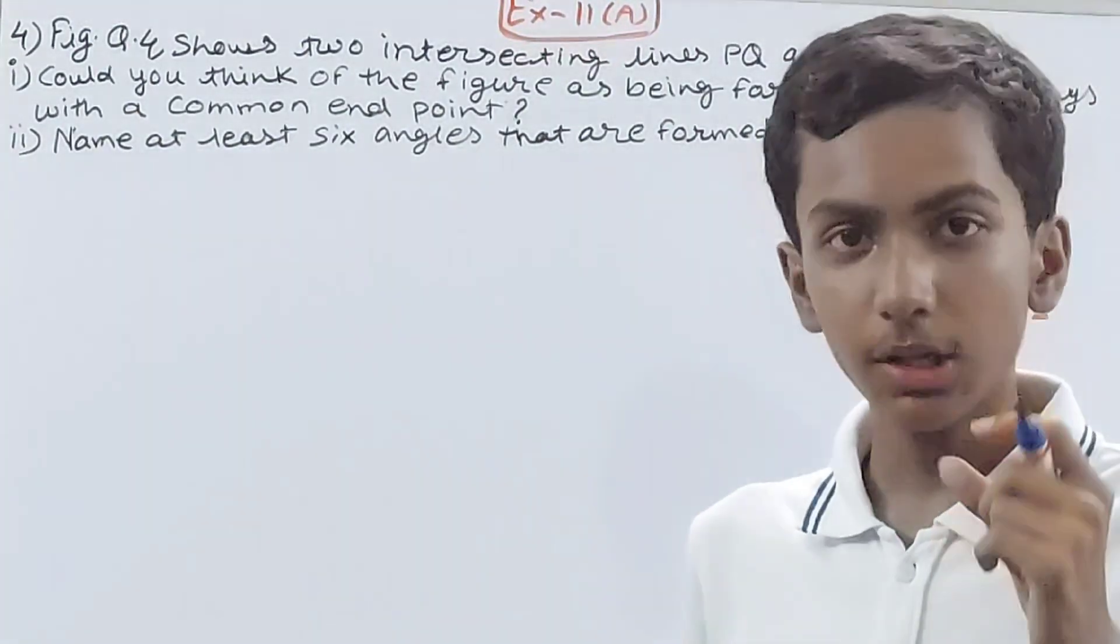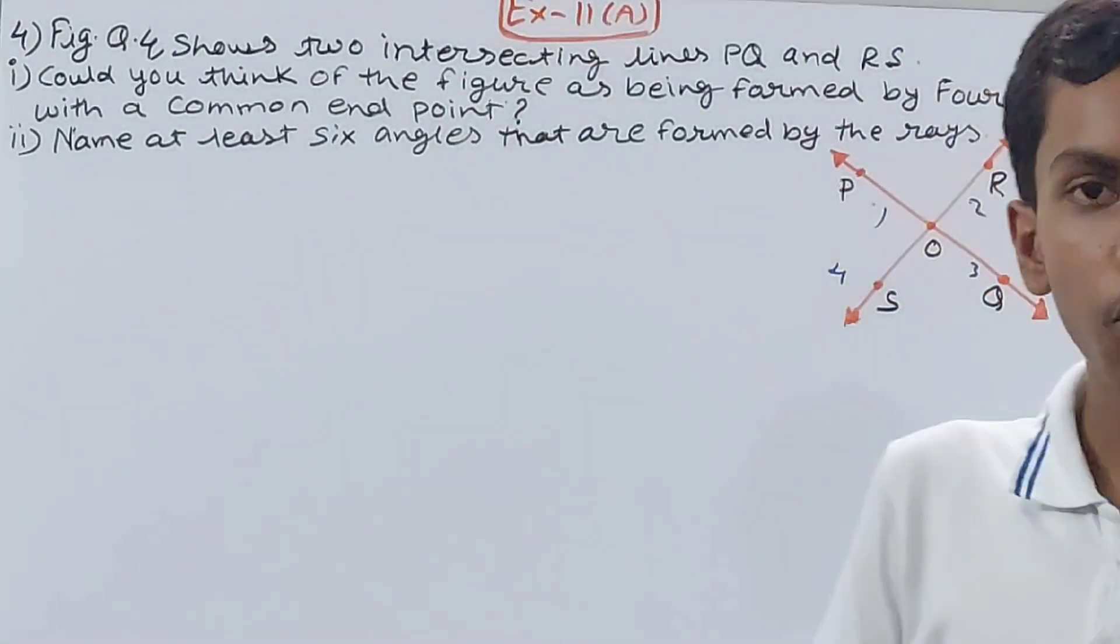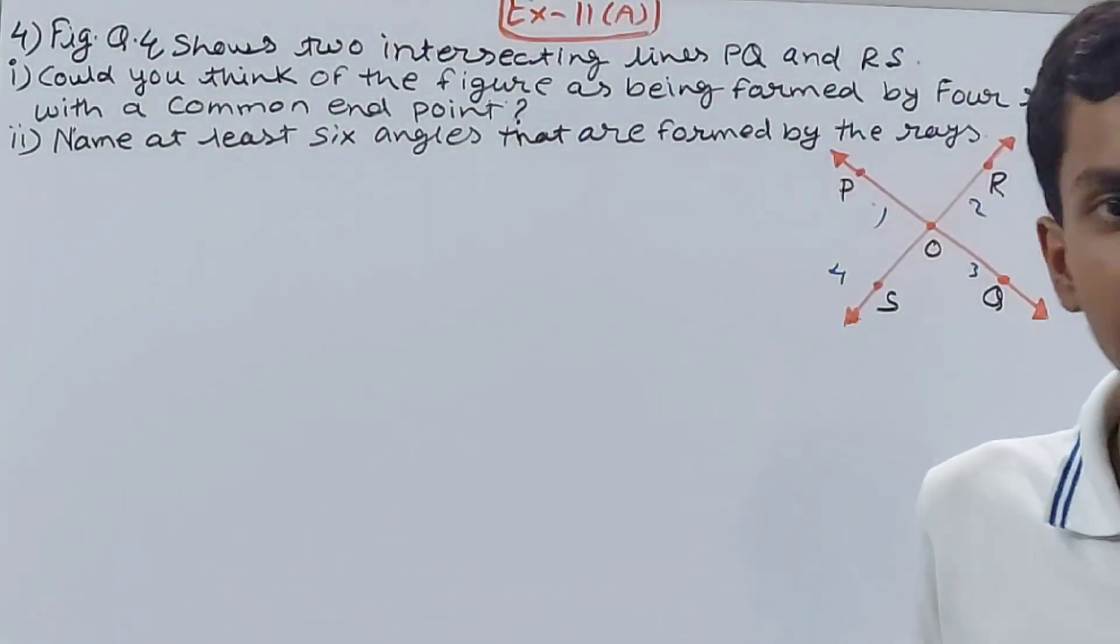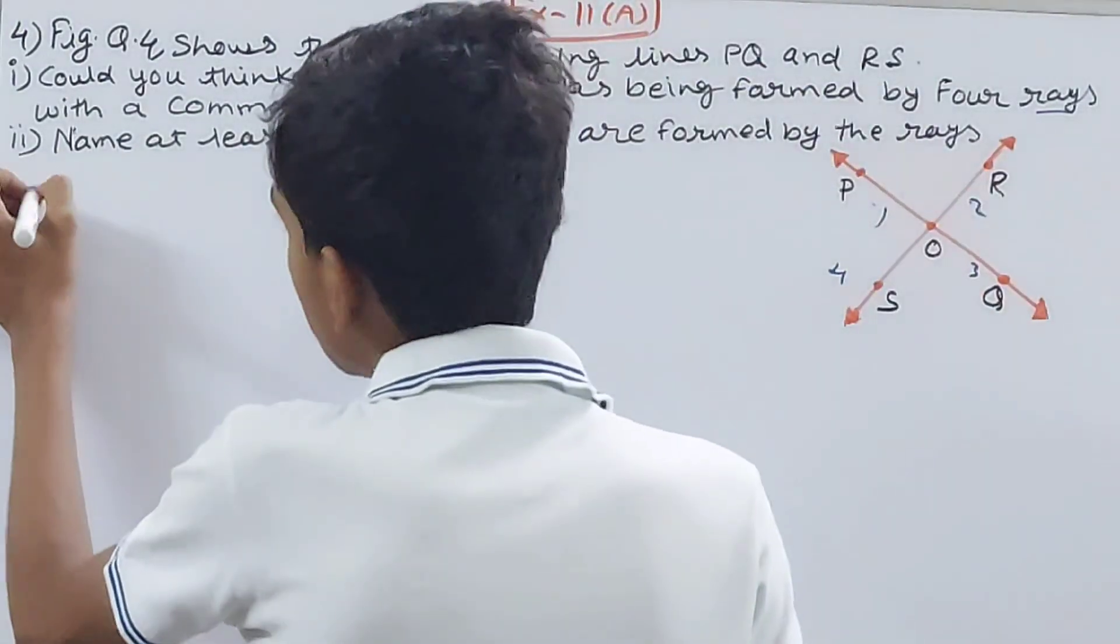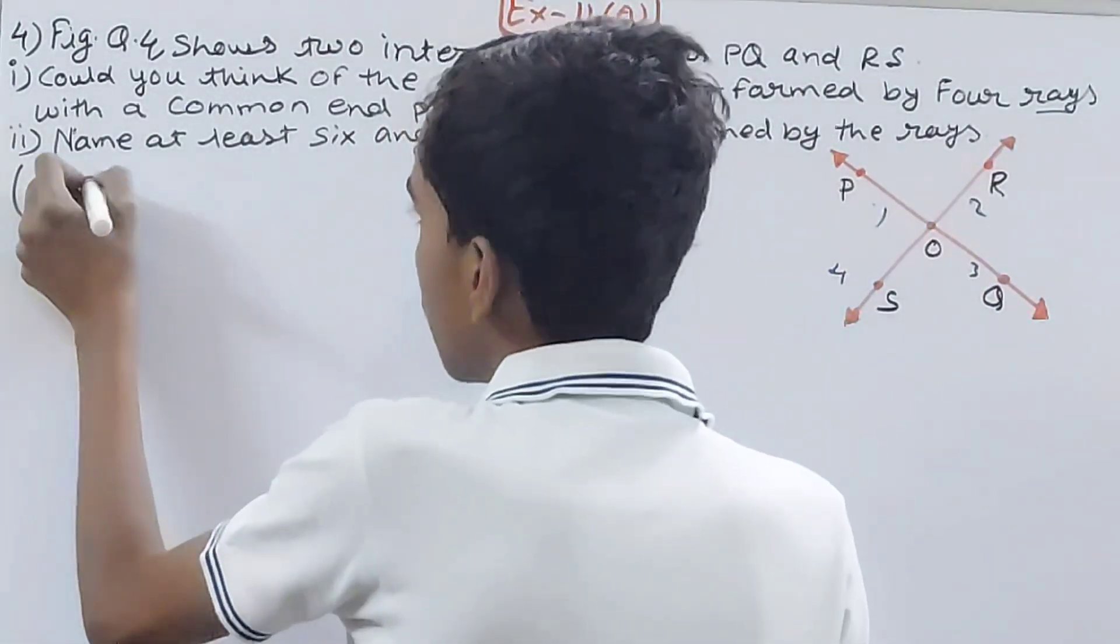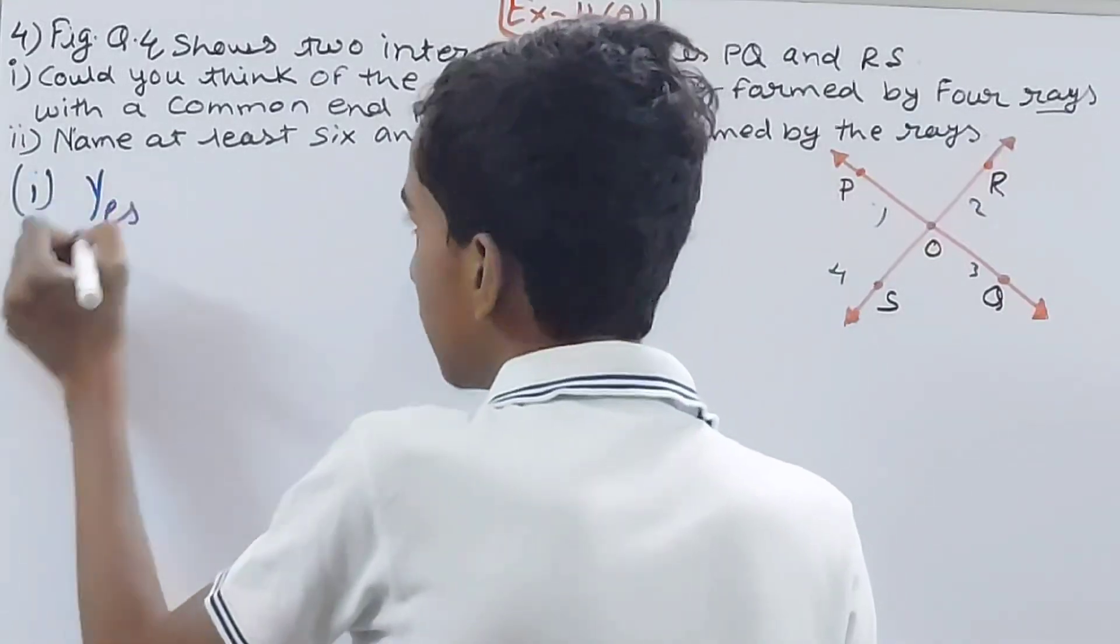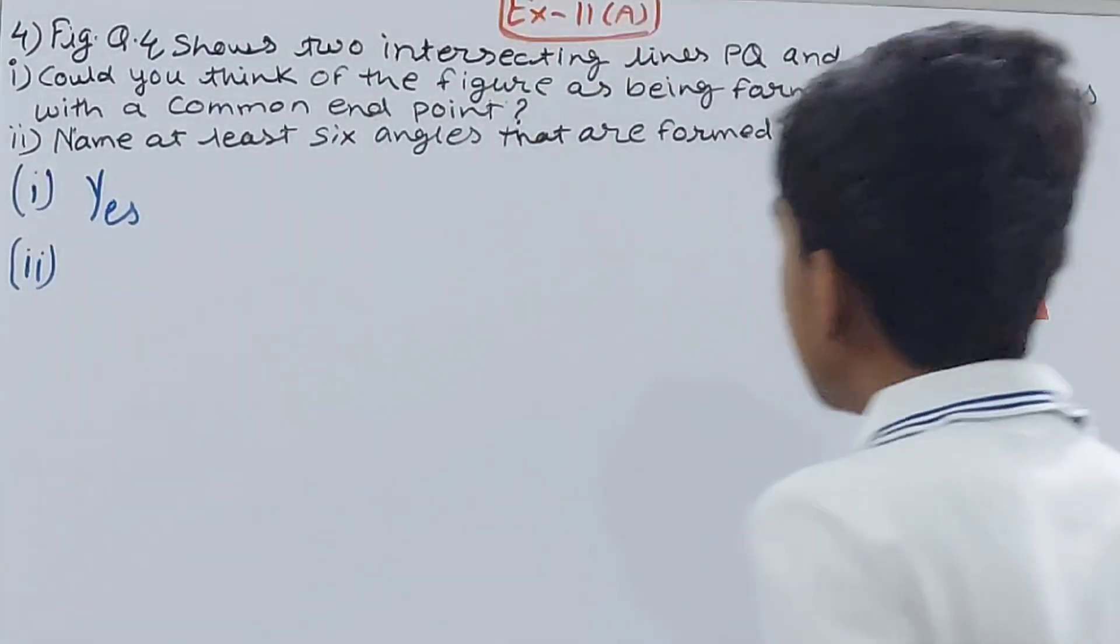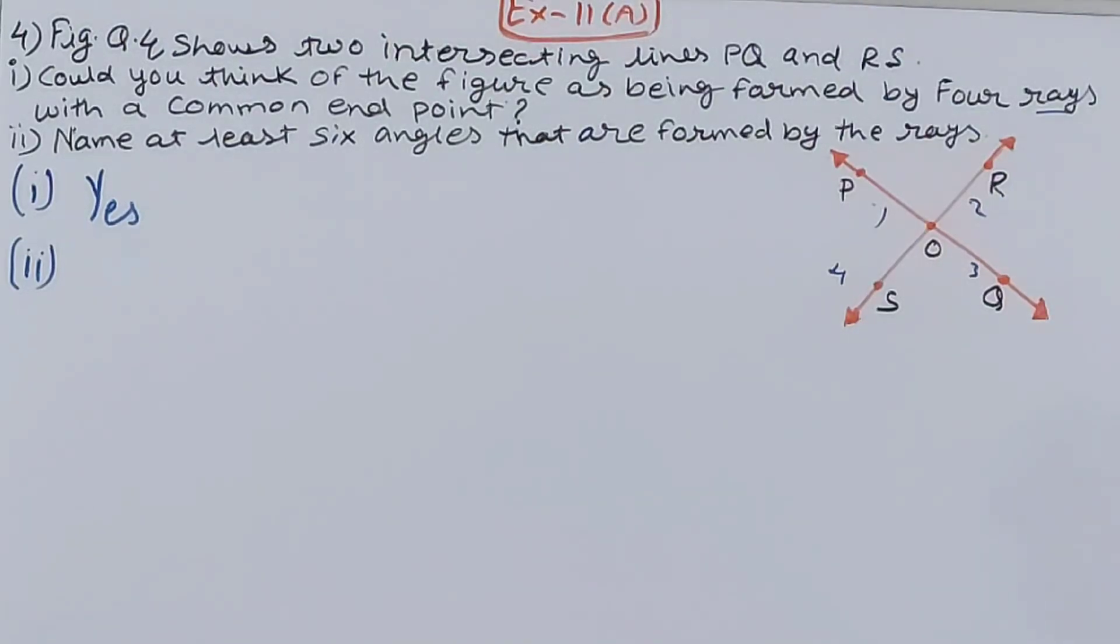Can we say the common point of all four rays is O? So yes, we can say that it is a figure formed by four rays having one common endpoint. So your first part's answer is yes. Now comes the second part: name at least six angles that are formed by the rays.